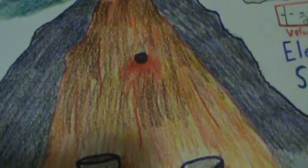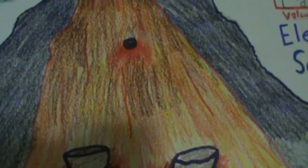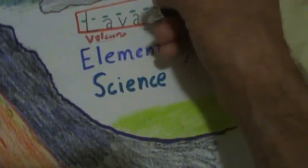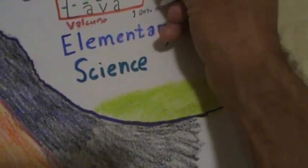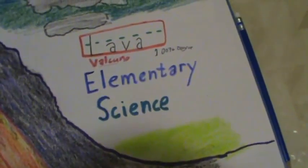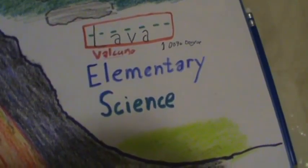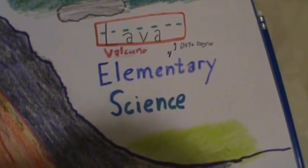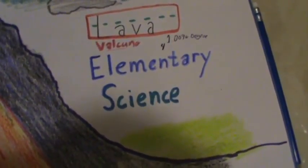Thinking about it now, if I were on a trivia test about volcanoes, I'm not sure I could answer questions like what the top layer is called or what lava looks like at 2,000 degrees. I think most volcanoes have lava that reaches around 1,000 degrees — maybe 960 degrees — but I'm not certain about the chemistry or geology measurements.